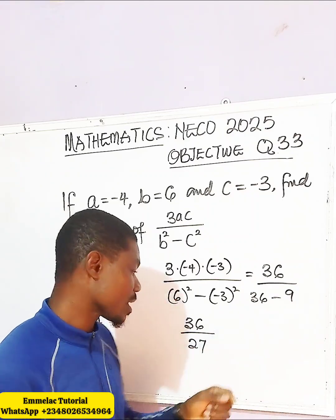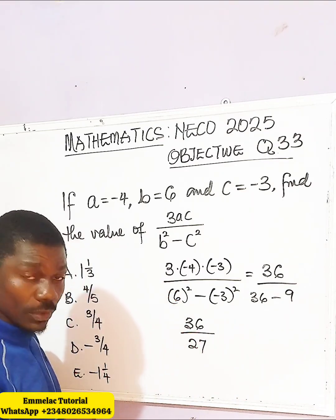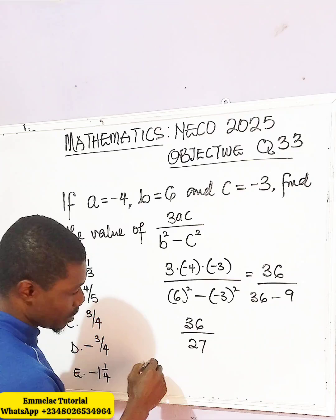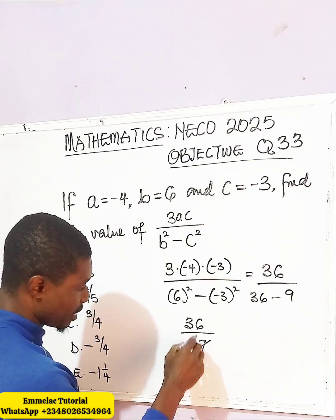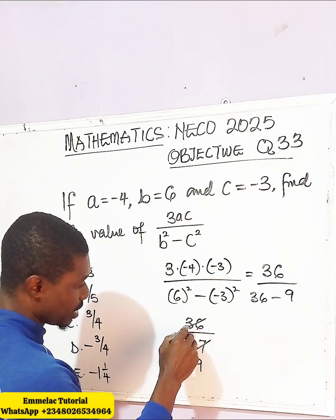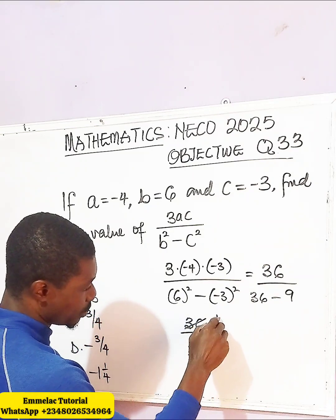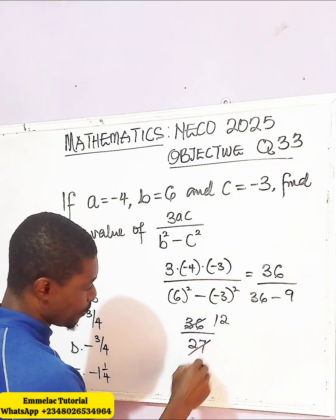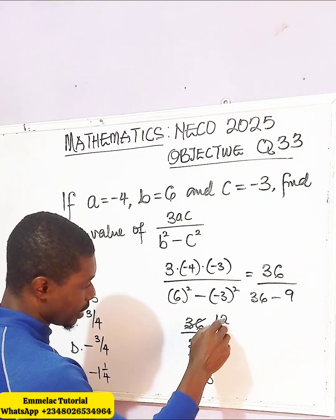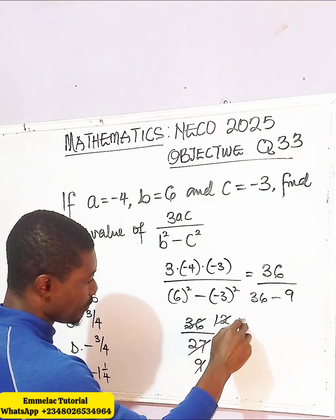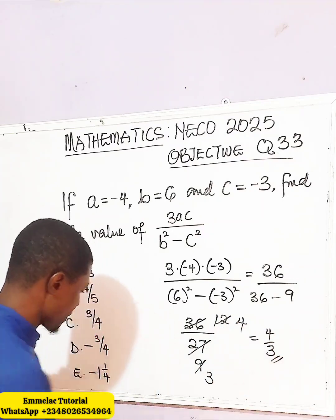36 minus 9. So is there any common term here? Let's look at this — 3 here, 9, 3 here, that will be 1 and 12; 3 here, 3; 3 here, 4. So that will be 4 all over 3.